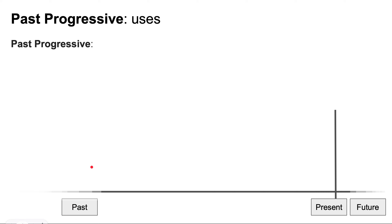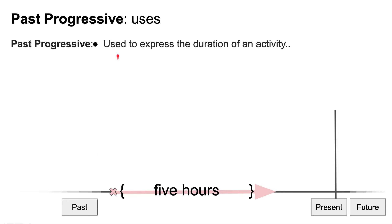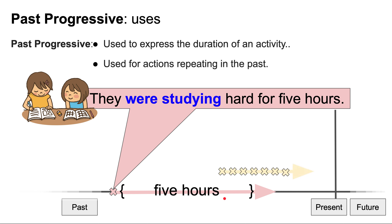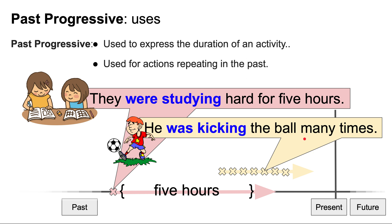Now let's look at the uses. The first use: we use the past progressive to express the duration of an activity. For example, they were studying hard for five hours — five hours being the duration. We can also use the past progressive for actions repeating in the past, repeating many times. For example, he was kicking the ball many times.